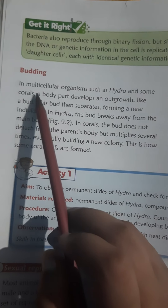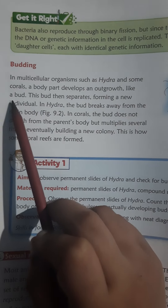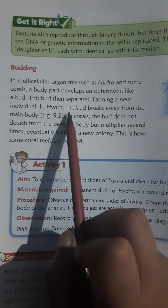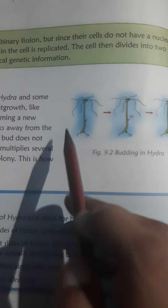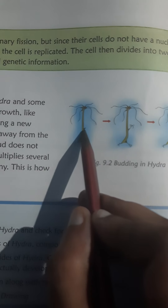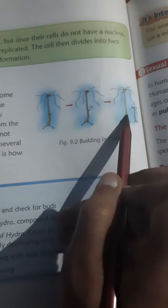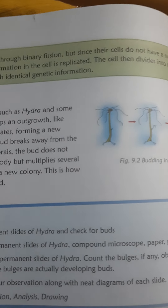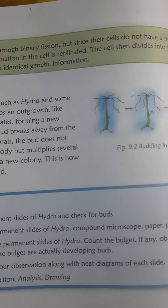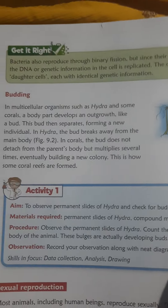The next type is budding. In multicellular organisms such as hydra and some corals, a body part develops an outgrowth like a bud. This bud then separates, forming a new individual. In hydra, the bud breaks away from the main body. Ginger is also an example of budding. That process is known as budding.